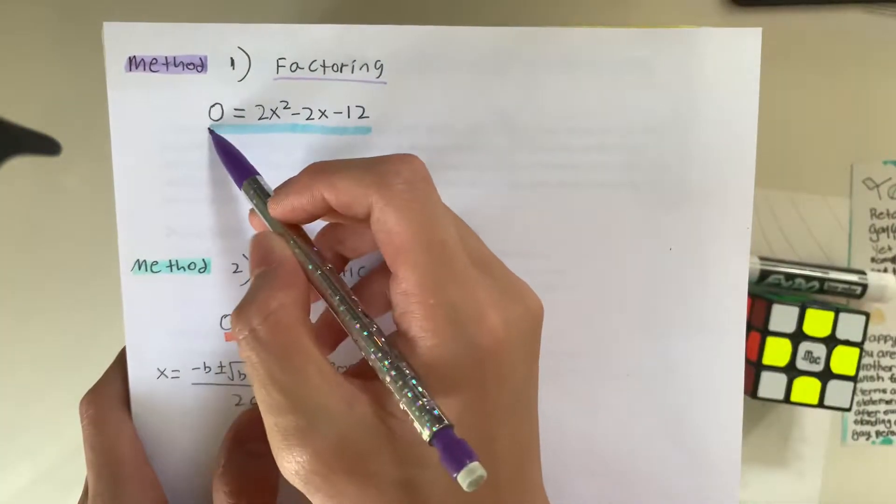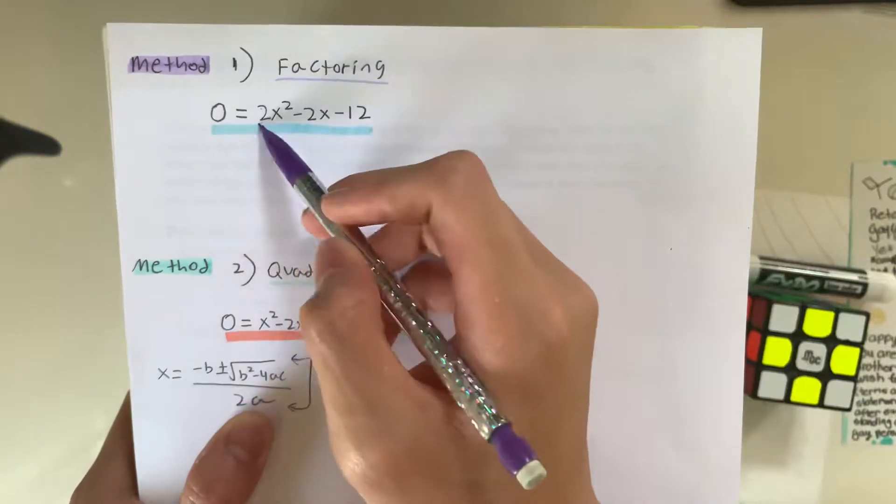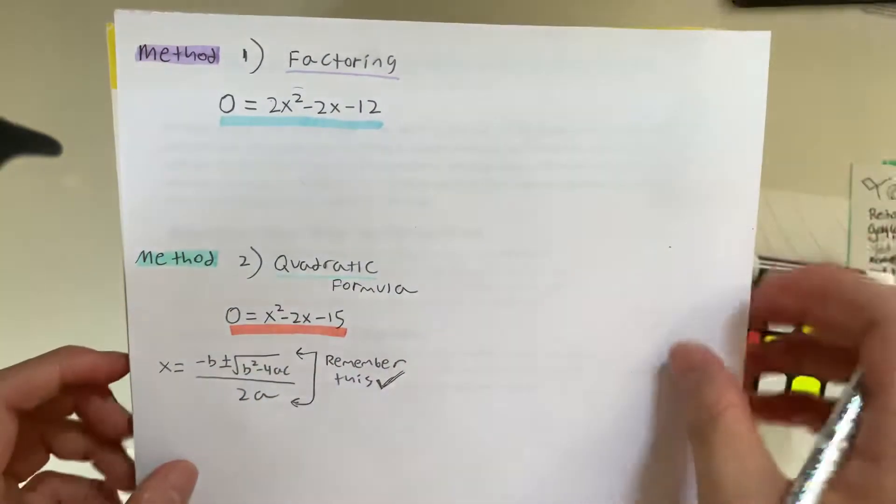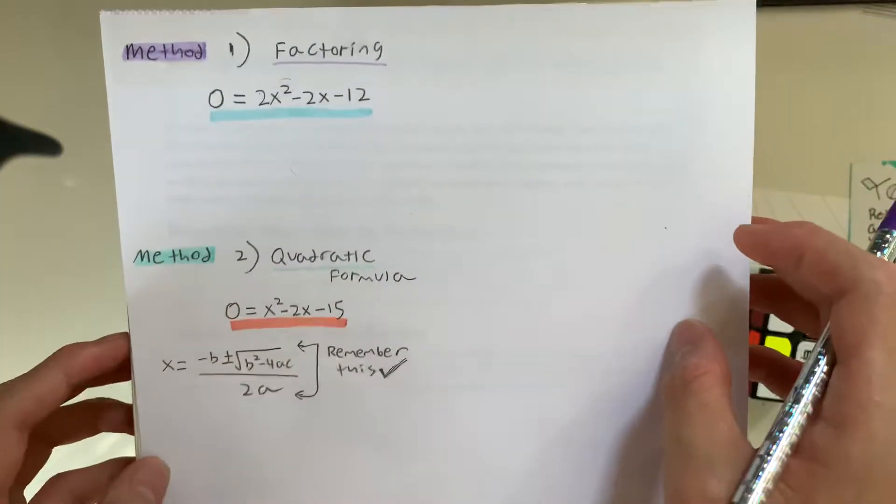So, as you guys see here, this is a quadratic, right? It has a square, it's equal to zero. So, there's four methods. These four methods right here, and I'm going to teach you all four.